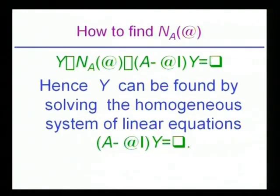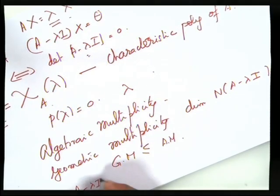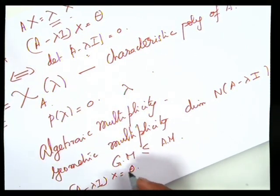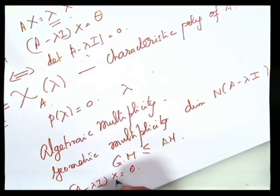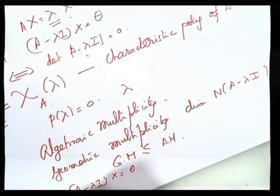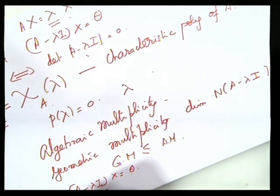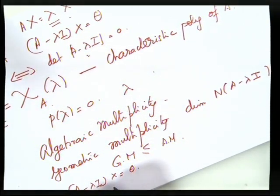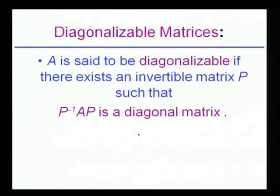How do we find the eigenspace corresponding to an eigenvalue lambda? We solve the equation (A − lambda·I)x = 0. This is a homogeneous system of linear equations, and the solution set gives the eigenspace — the set of all eigenvectors corresponding to lambda.